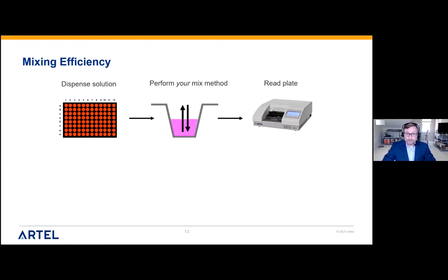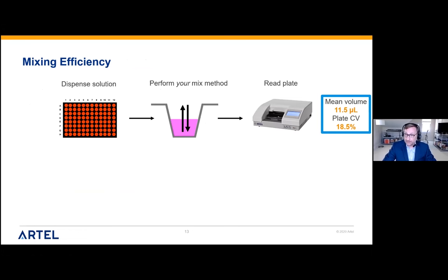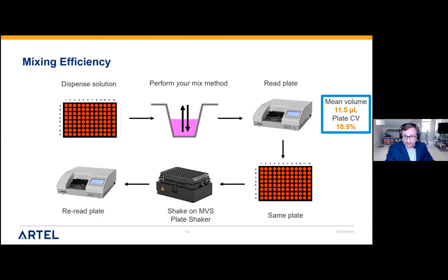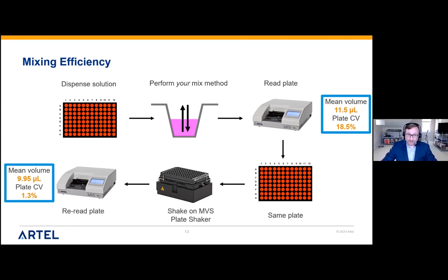For mixing efficiency: you dispense your solution, add your diluent, perform your proposed mix method, and read the plate. As illustrated, with a target of 10 microliters, we had a mean volume of 11.5 microliters and a plate CV of 18.5%. Taking that exact same plate, putting it on the RTL validated plate shaker — which has been rigorously optimized to combine reagents most efficiently — and reading again gives a mean volume of 9.95 microliters with a plate CV of 1.3%. This clearly shows the particular mix method employed was not sufficient.